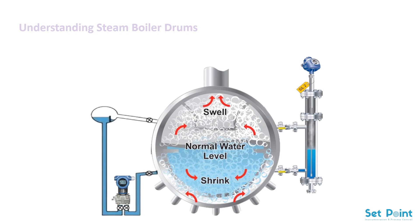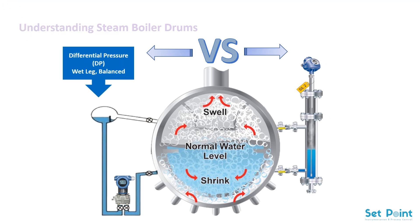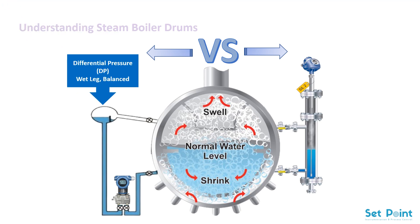As water vaporizes and changes from steam to saturated steam, its density changes, which leads to challenges for level measurement technologies like differential pressure, which rely on a constant density to provide an accurate measurement.